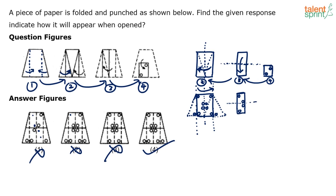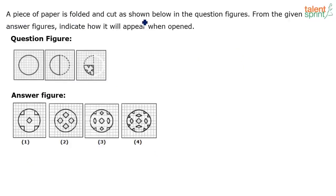The process is: understand the folds from 1 to 2, 2 to 3, 3 to 4, then do the unfolding from 4 to 3, 3 to 2, and 2 to 1. Based on whether the folding is horizontal or vertical, treat it as a water image or a mirror image respectively. Option 4 is the final answer.